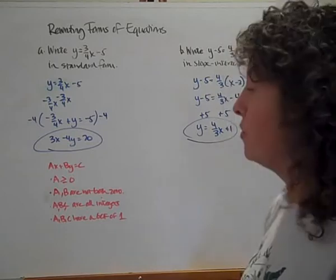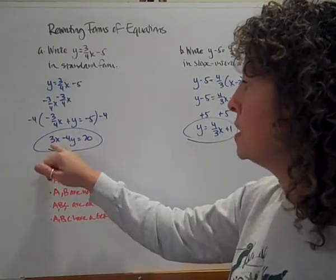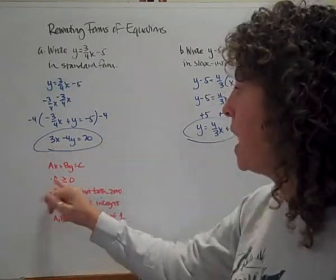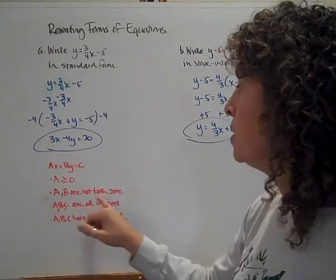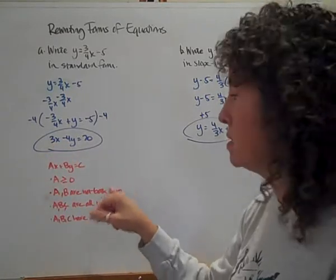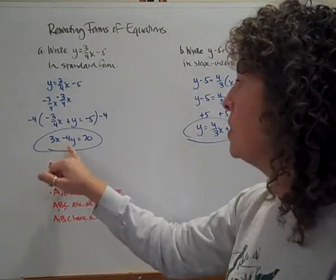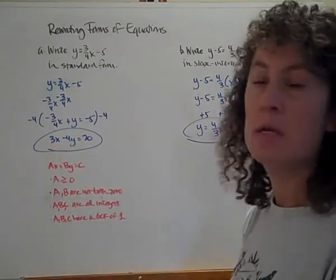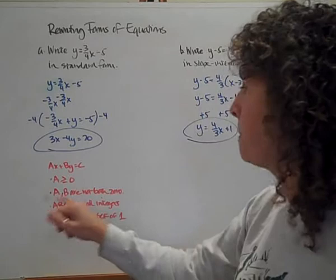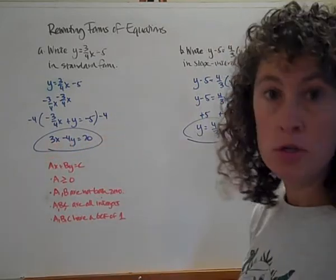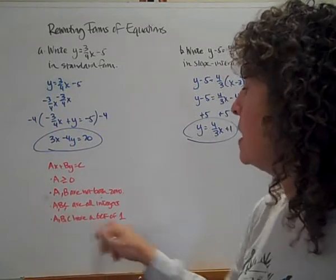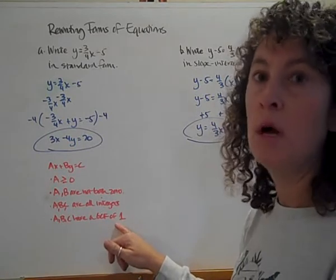Let's talk about the rules of standard form here. ax plus by equals c. a has to be greater than or equal to zero. Yes, that is true. a and b are not both zero. I'm going to talk about this in a minute, so we'll come back to this. So a is three and b is negative four, so they're not both zero. a, b, and c are all integers. a, b, and c all integers, no fractions or decimals, and a, b, and c all have a GCF of 1.